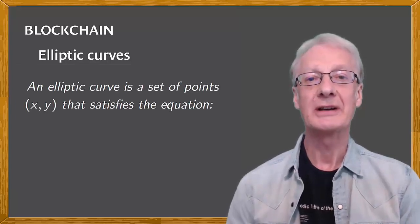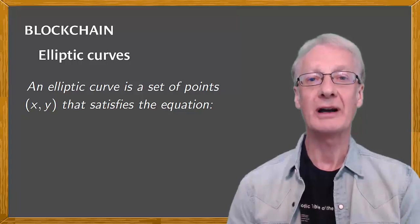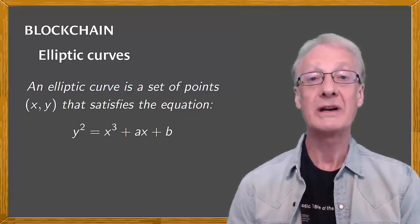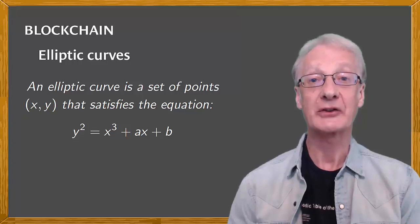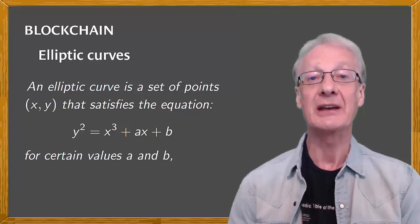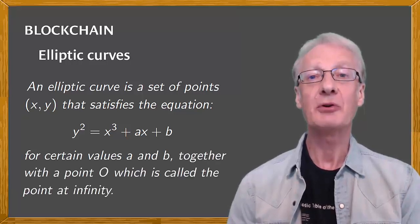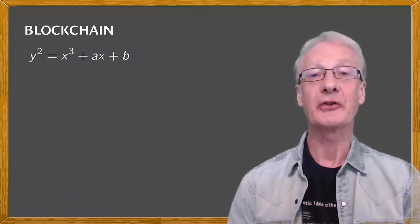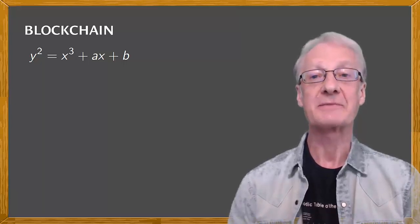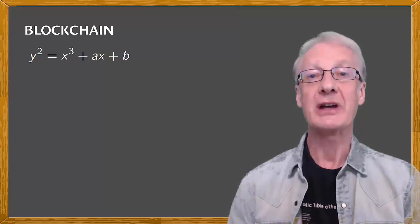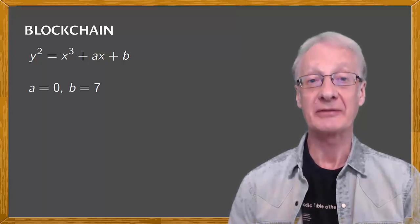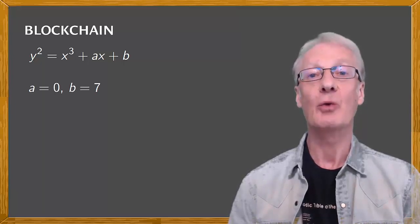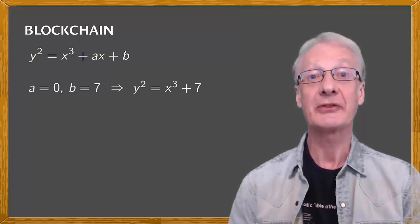An elliptic curve is a set of points X, Y that satisfies the equation Y squared equals X cubed plus AX plus B for certain values A and B, together with a point O, which is called the point at infinity. Now, the elliptic curve used for the blockchain is the specific one for which A equals 0 and B equals 7. In other words, Y squared equals X cubed plus 7.